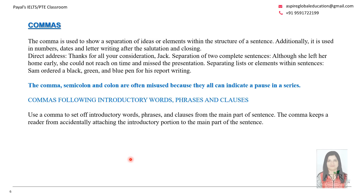Now let's look at the comma, the second most important punctuation mark. The comma is used to show a separation of ideas or elements within the structure of a sentence. You could use it for direct address — 'Thanks for all your consideration, Jack' — where Jack is the person being addressed. It also separates two complete sentences: 'Although she left her home early, she could not reach on time and missed the presentation.' A comma is also used to separate lists: 'Sam ordered a black, green and blue pen for his report writing.'